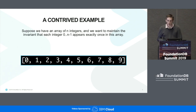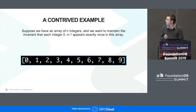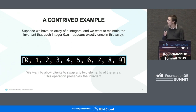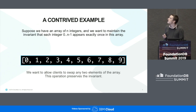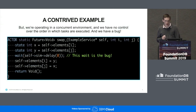We're going to be using this example bug throughout. Basically, we've got some integers here, and we want to maintain the invariant that each one appears exactly once. We're going to allow clients to swap elements, and this preserves the invariant.